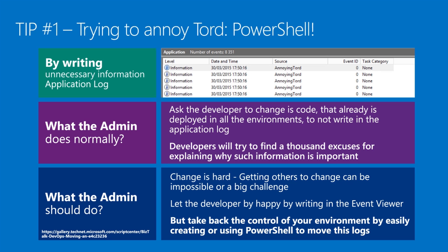What admins normally do is try to change the mind of the developers — change the code. But this is a fight they will not win. Developers will find a thousand excuses to say that this information is important. They need to know when the message arrived, was transformed, and was sent. So don't try to change that. Take control of your environment and fix it for the developers.